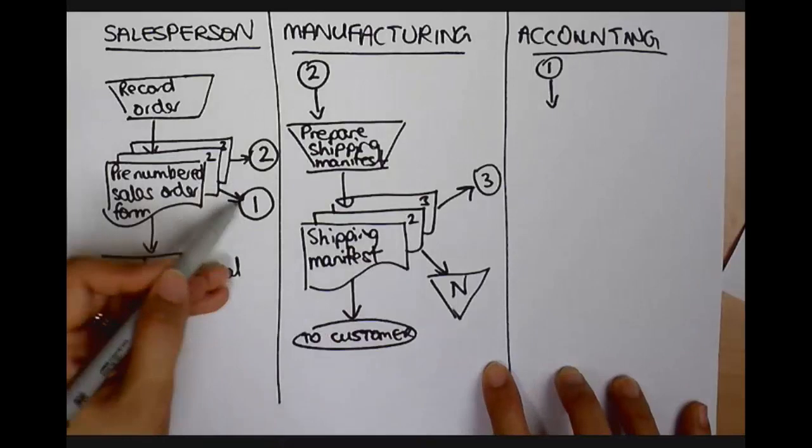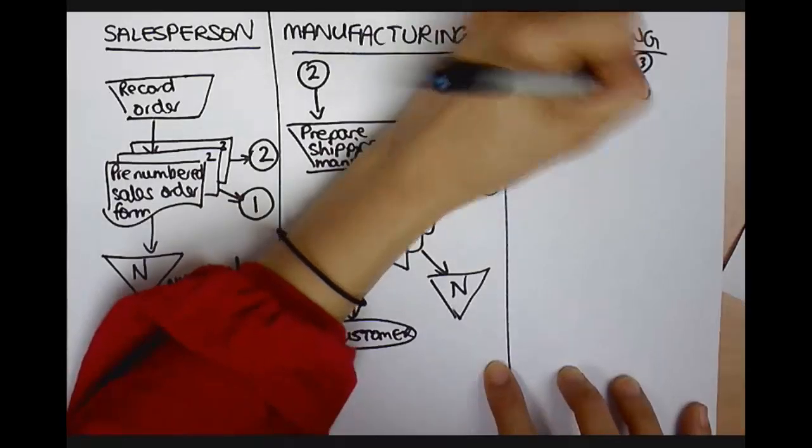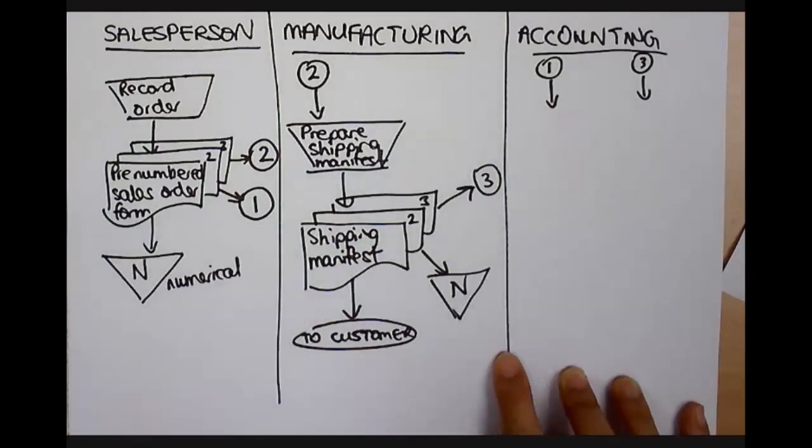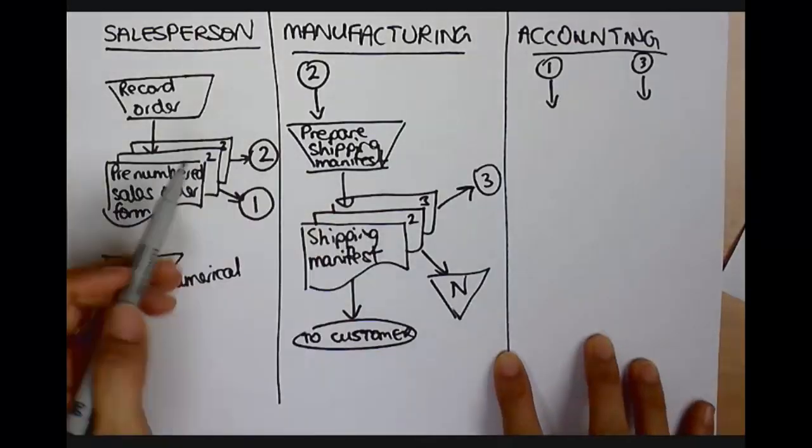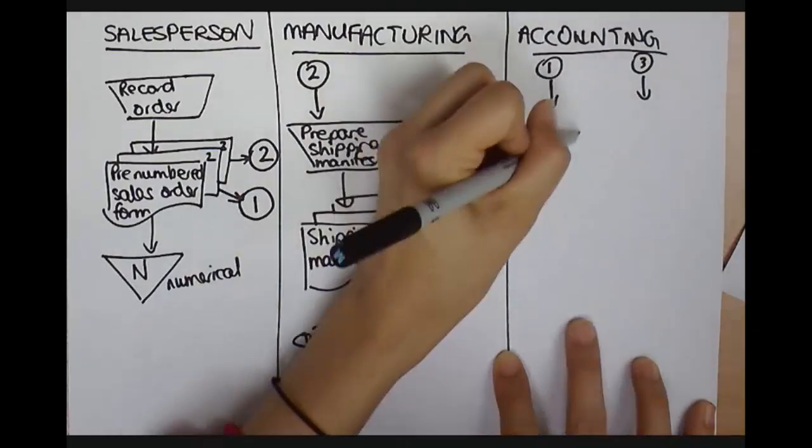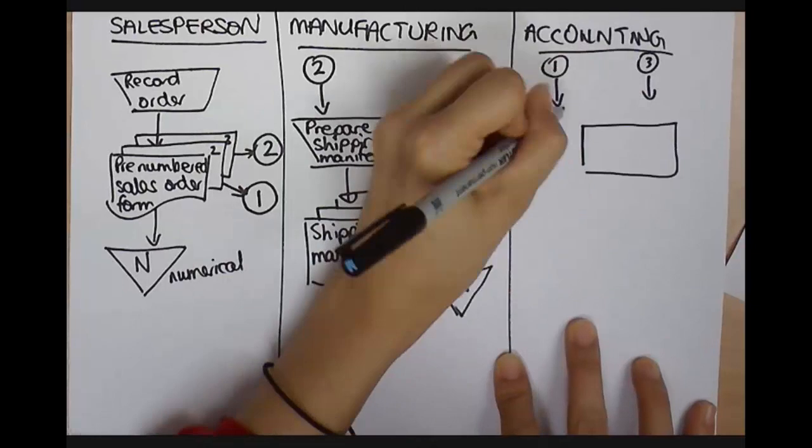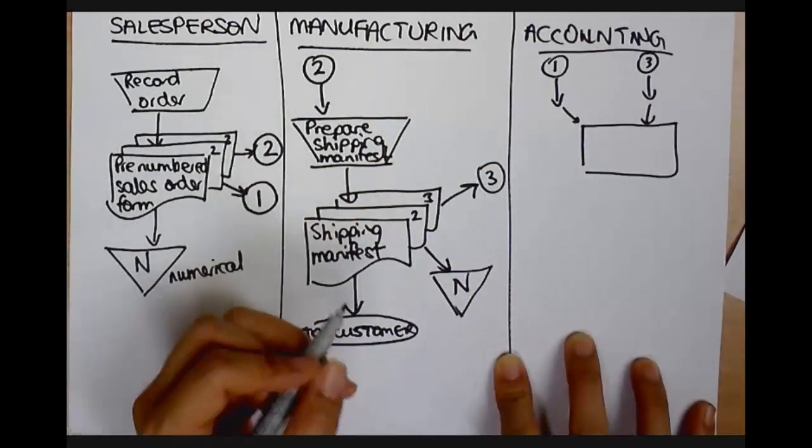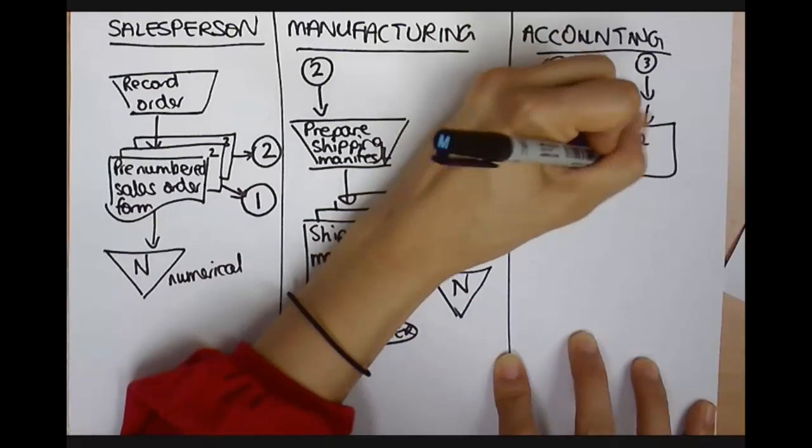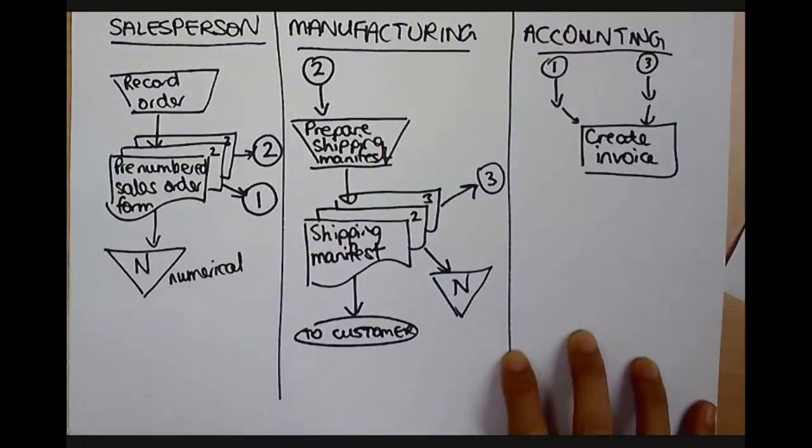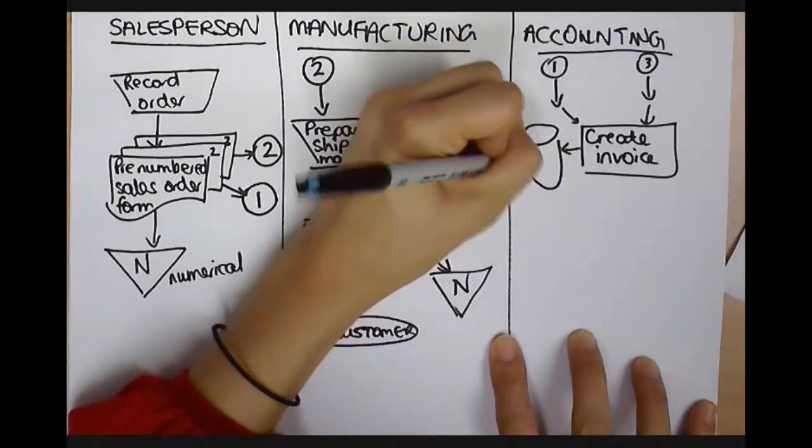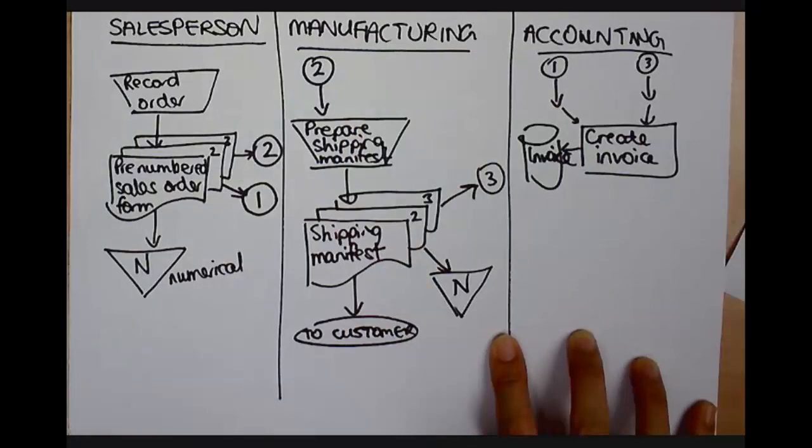So, accounting has documents from spot number one and spot number three. Alright. So, when the account receives the order of a shipping manifest, an invoice is created on the computer system. Okay. So, we've got order. Alright. So, then they go onto the computer. It needs to go like that. And they create the invoice. Alright. Now, it does this into some sort of computer system. I'm going to put that on the side here. It could be an invoice system or an accounting system.